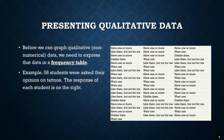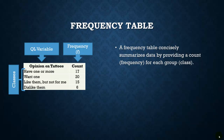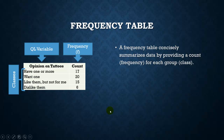To organize this, we can create what's called a frequency table. A frequency table is a nice concise way of summarizing the data. You want your qualitative variable — in our case, opinion on tattoos — in one column, and the frequency or count of each response in the other column. The different values or possibilities for a qualitative variable are called classes. Here we have four classes: have one or more tattoos, want one, like them but not for me, or dislike them. This is a lot easier to interpret than the giant list of 58 responses.